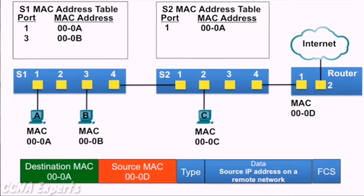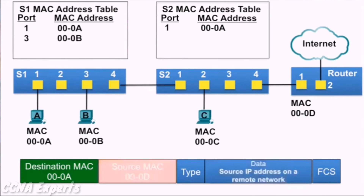Now we'll look at the Ethernet frame coming from the router back to PCA. The source IP address is the IP address of a device on a remote network. The source MAC address is that of the router at 000D, and the destination MAC address is that of PCA.